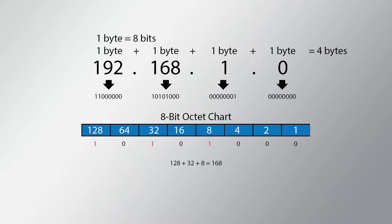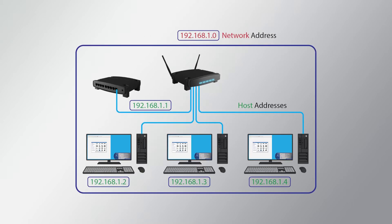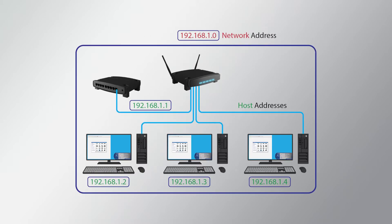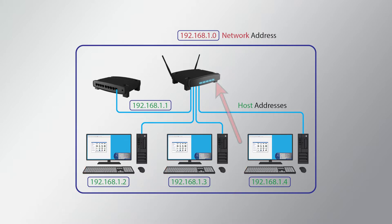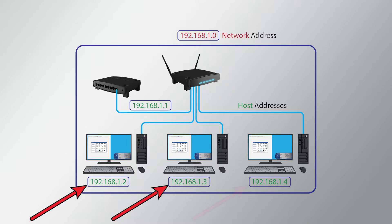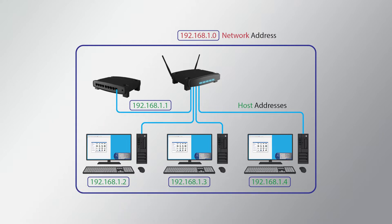Each host on a network must have a unique address. In this simple network example, three computers, or network hosts, and an Ethernet router are all connected to a network switch. Much like the home address on your house, each host has a unique IP address, which allows data to be directed to it.